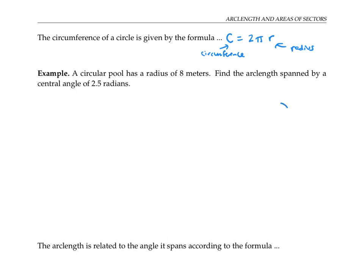A circular pool has a radius of eight meters. Find the arc length spanned by a central angle of 2.5 radians. So this angle from the center of the circle is supposed to be 2.5 radians. I've drawn the angle as a little bit less than half the circle, because half the circle would be pi radians, which is 3.141 radians.